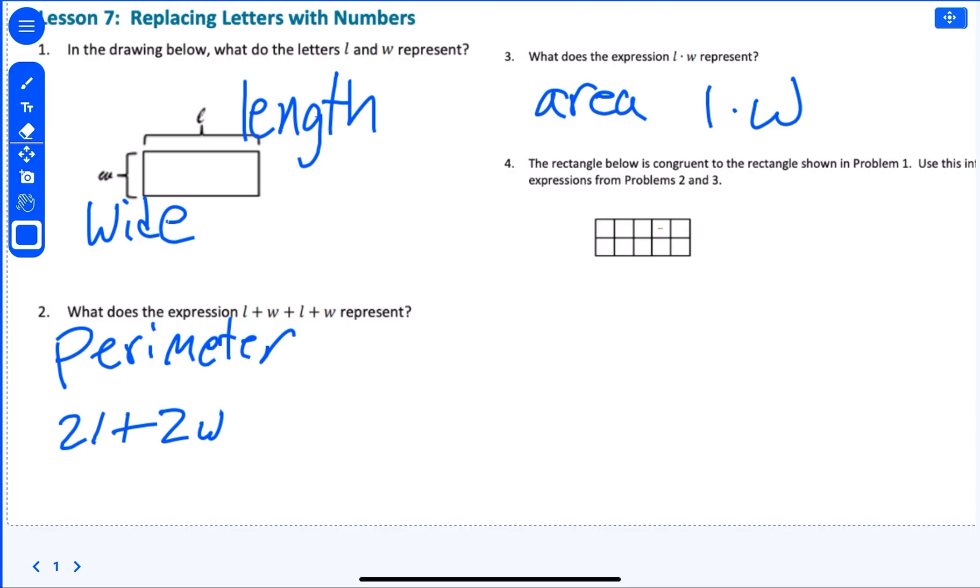The rectangle below is congruent to the rectangle shown in problem one. That means they're the exact same here.